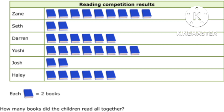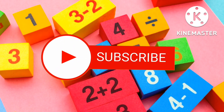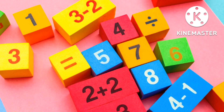This is the large representation for a reading competition for class students, and one image represents two books. From that you can easily calculate who is the winner of this competition. Stay tuned to my channel to get more such interesting math tutorial videos. Bye bye.